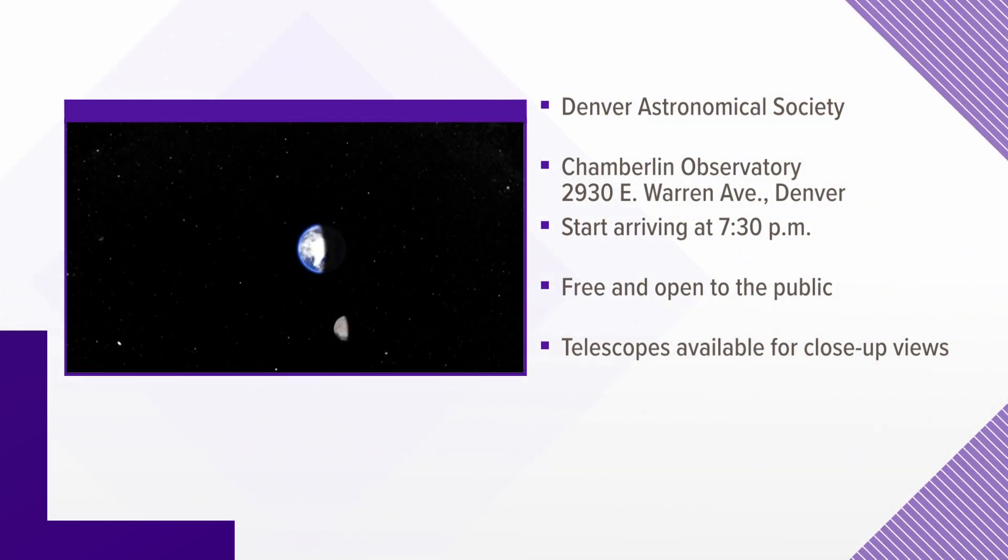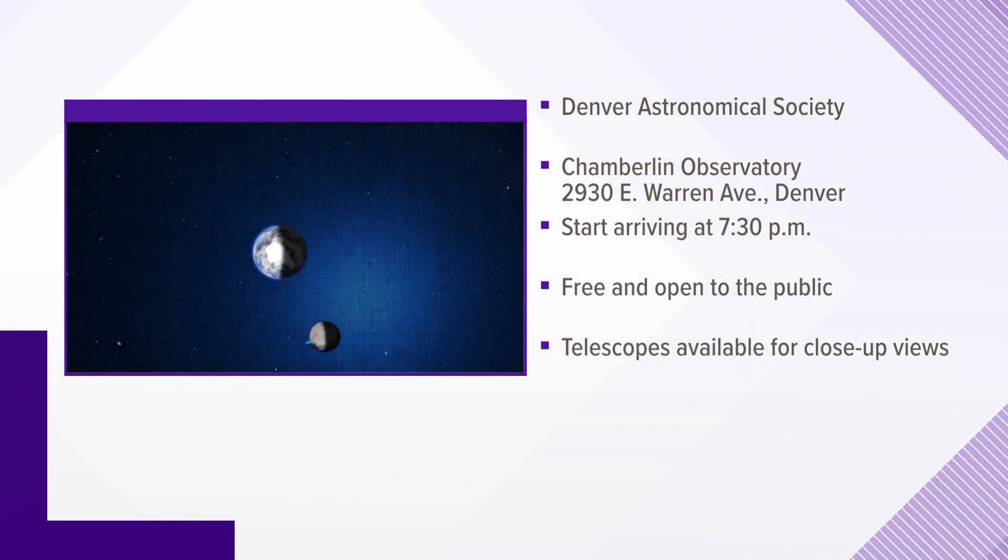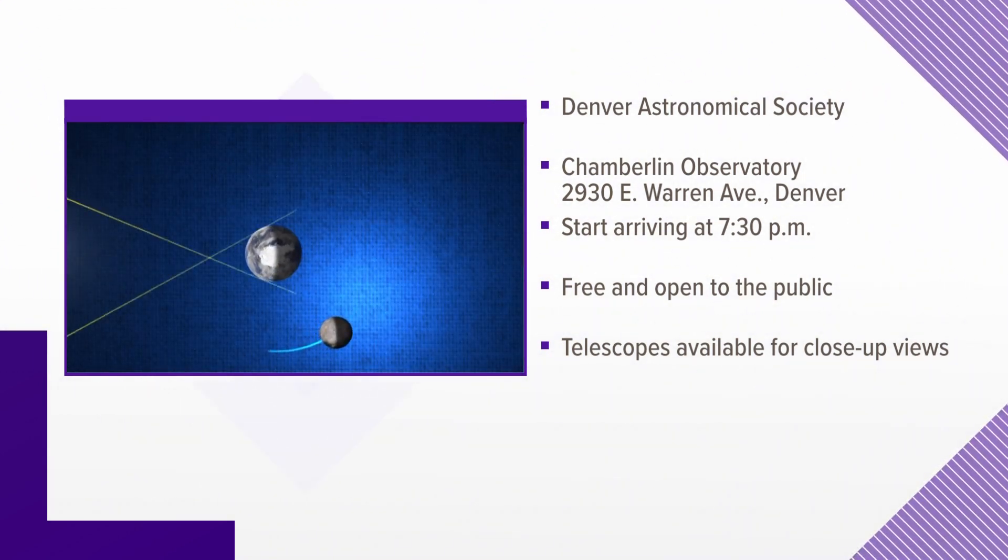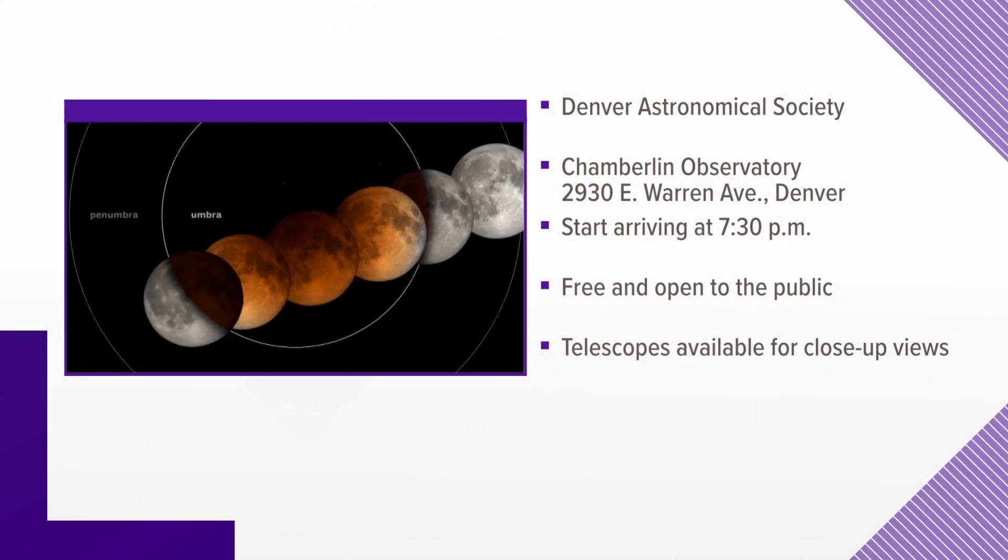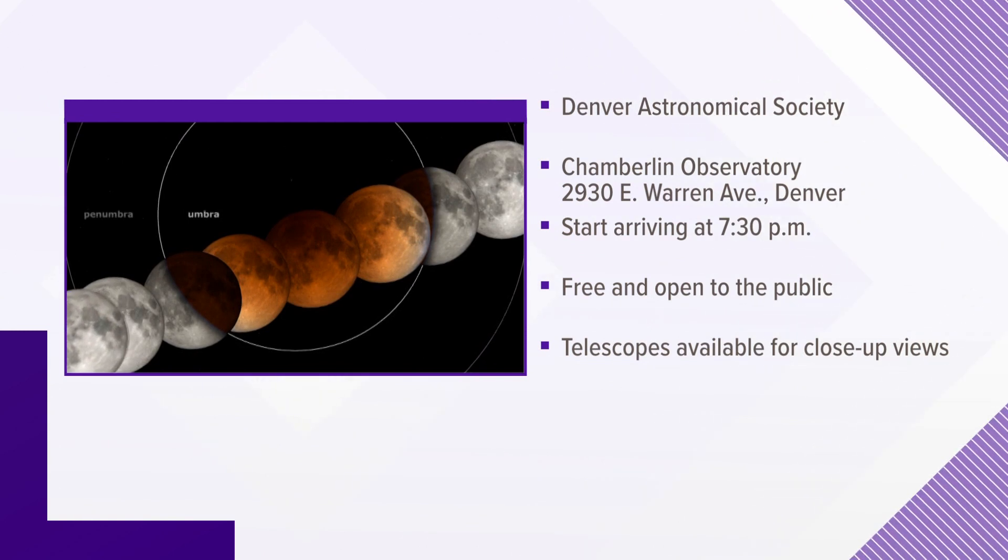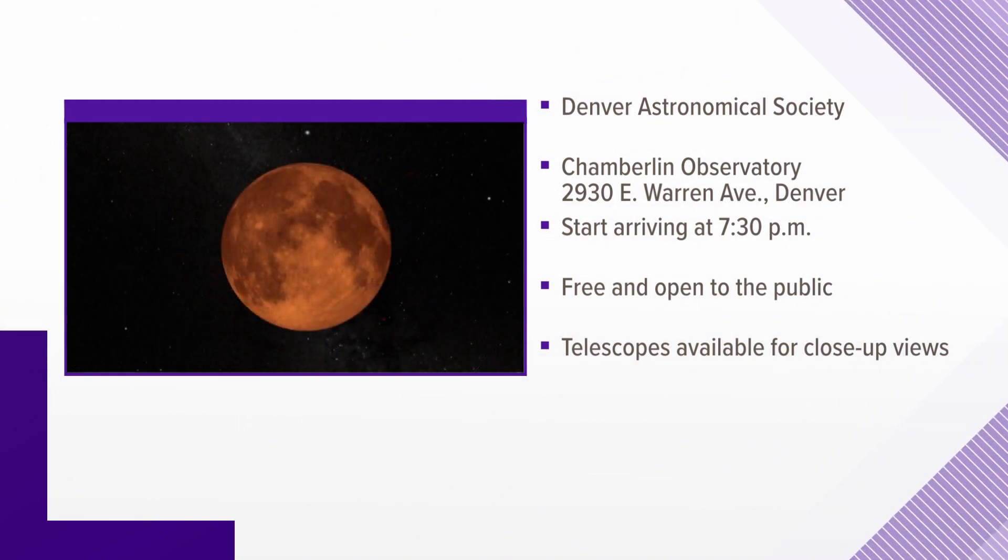It's happening at the historic Chamberlin Observatory just a few blocks east of DU's campus on Warren Street. They ask you to show up about 7:30 so everyone is set up before everything gets going. And they have telescopes set up so you can see the moon really close and check out the nearby stars and planets.